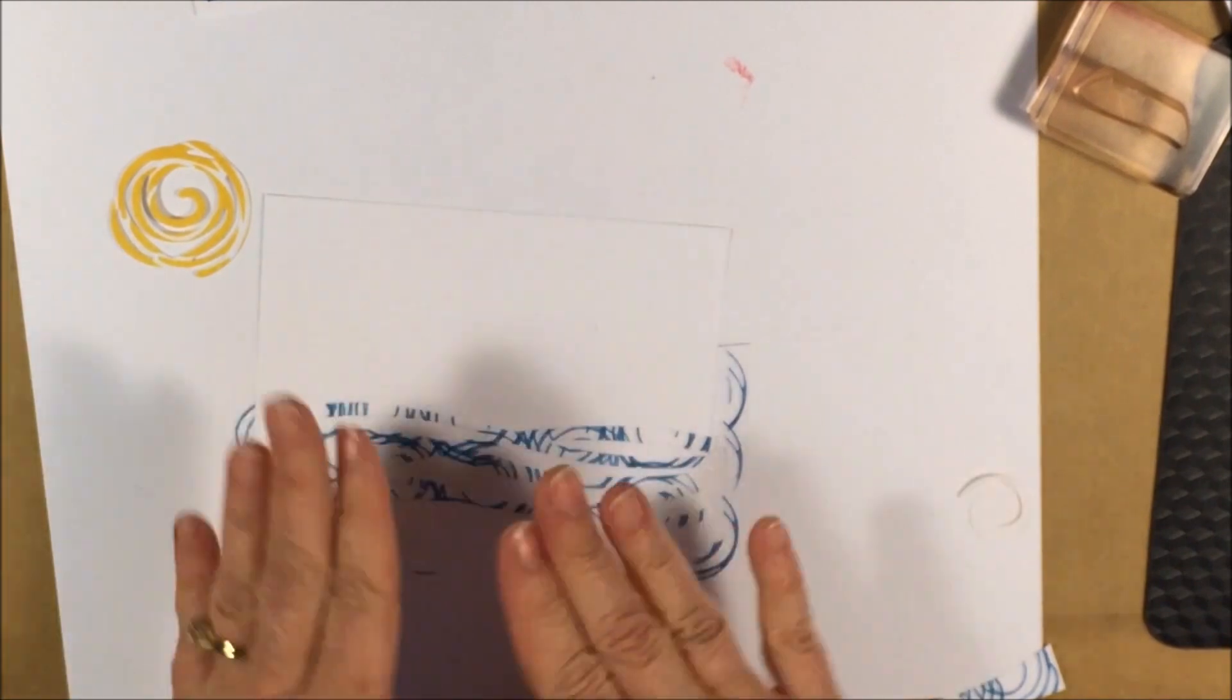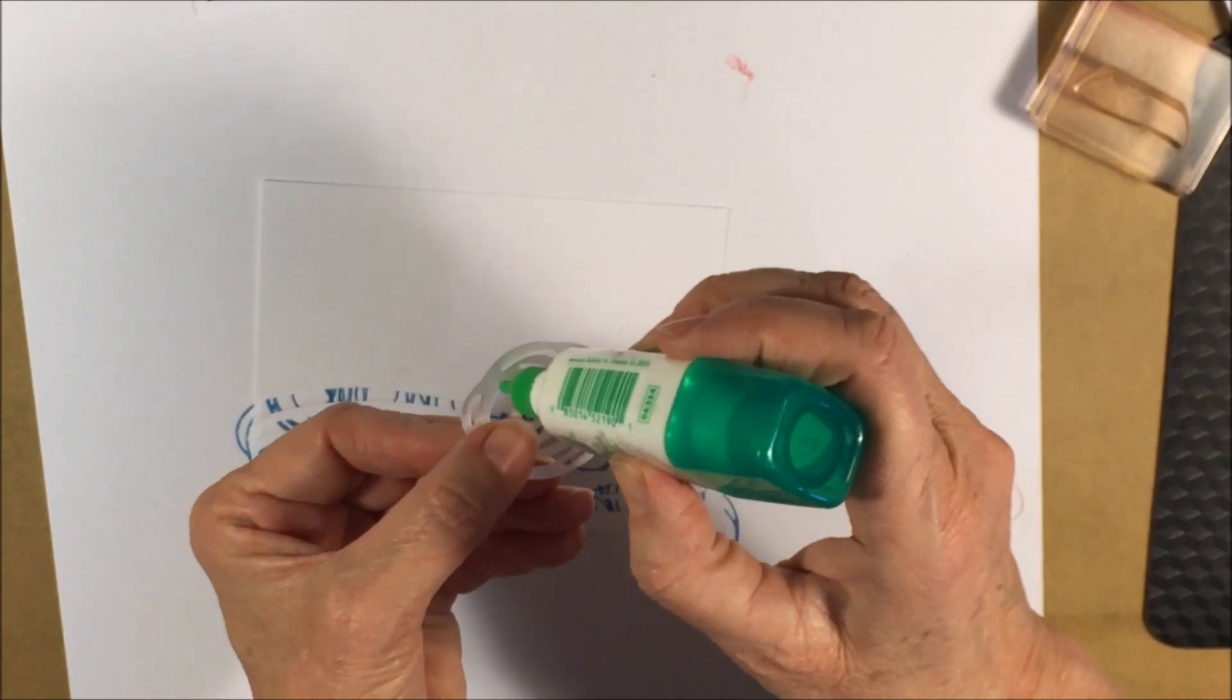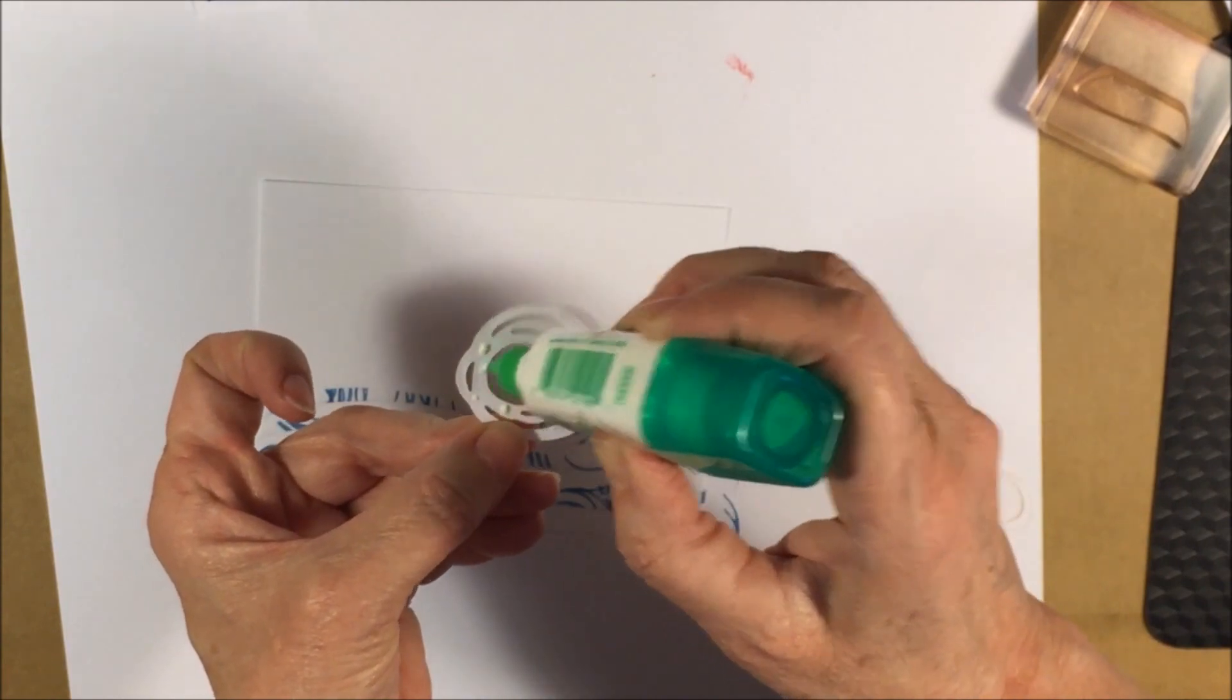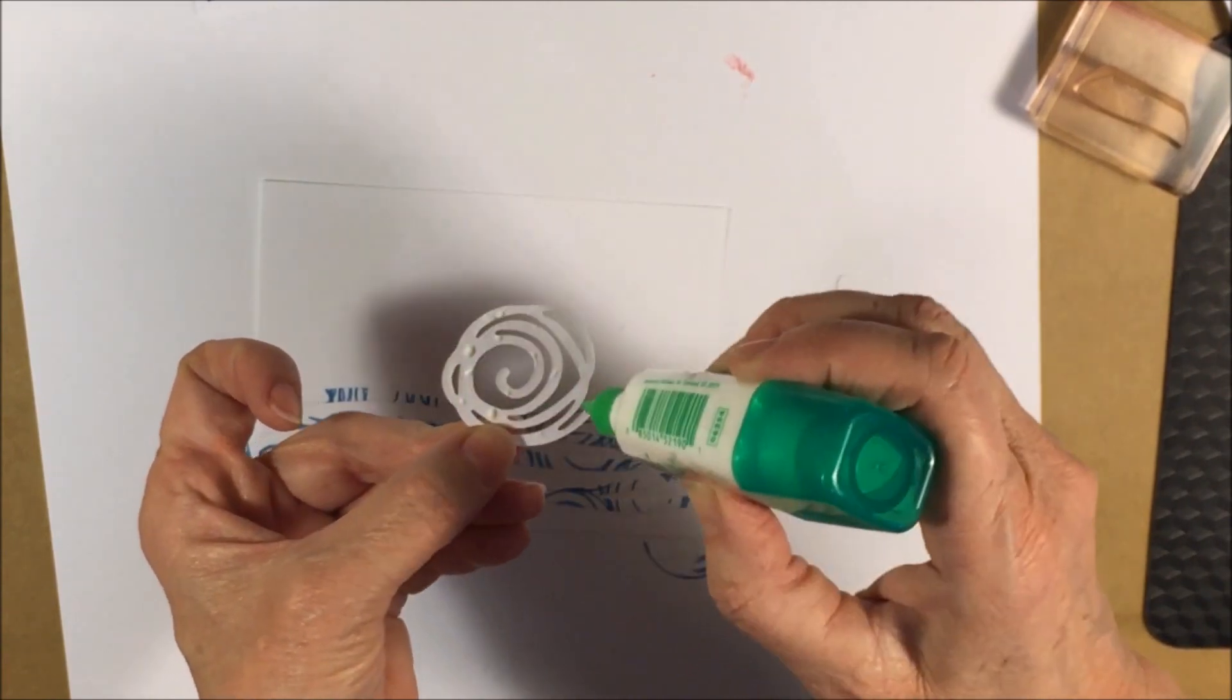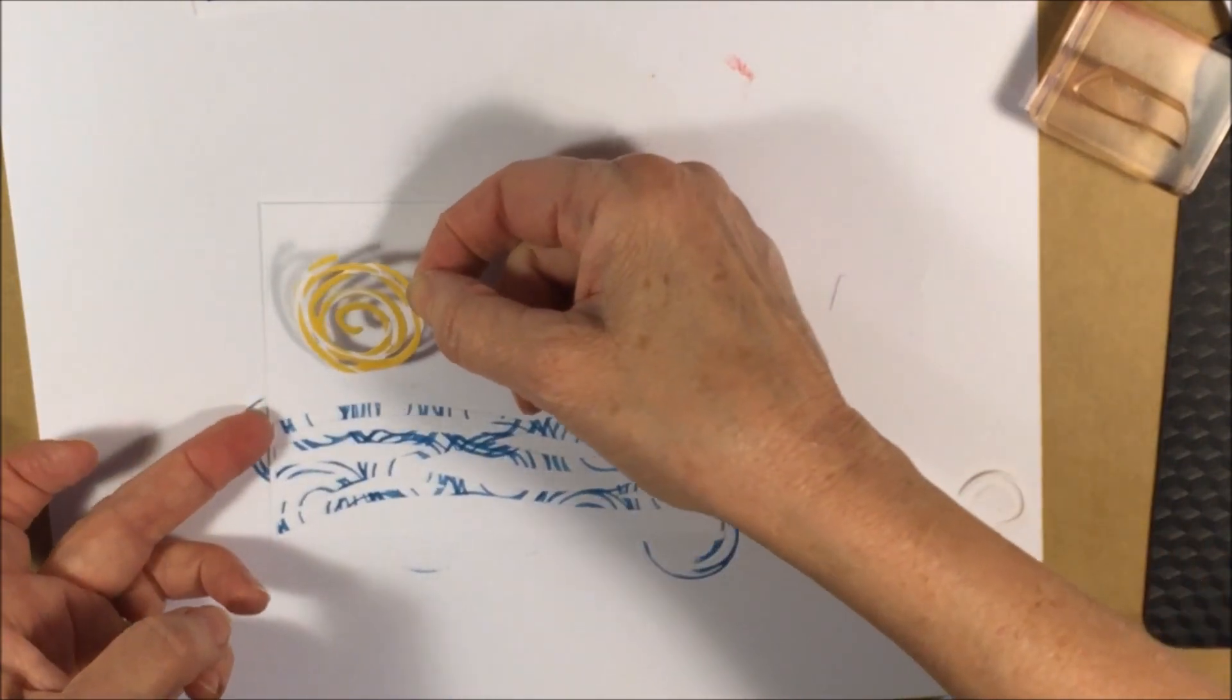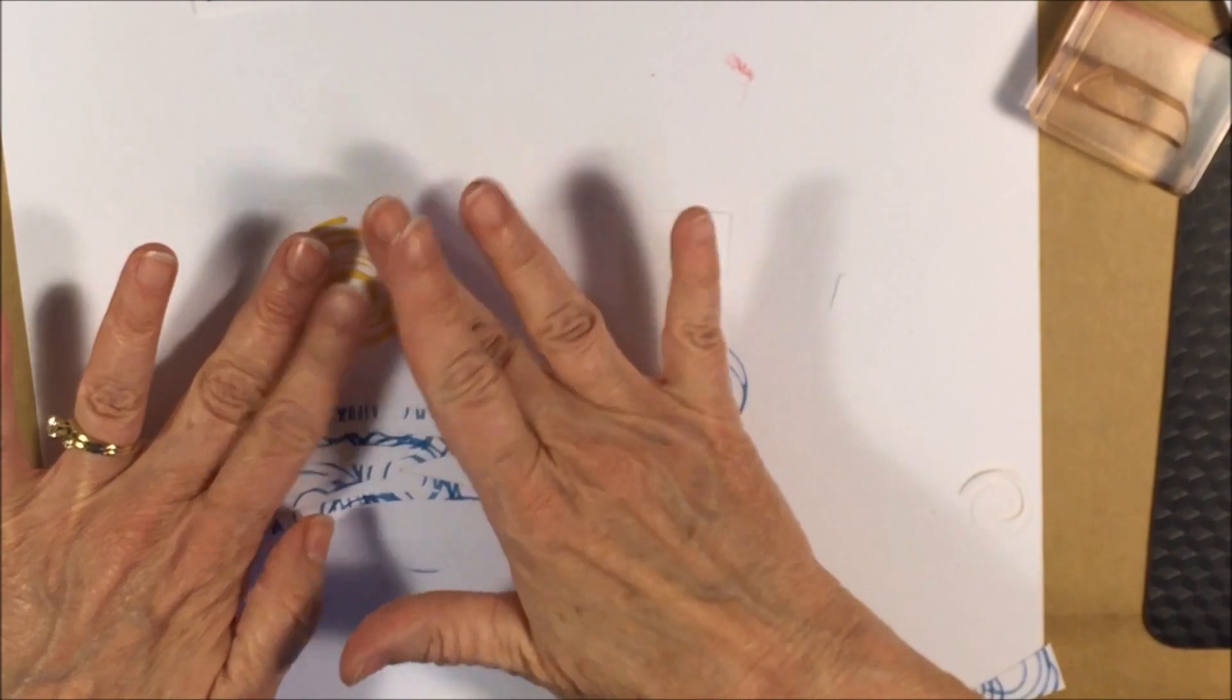My hands are sticky. Same thing for the sun. Tombow glue on the back. Isn't this easy? My hands get a little sticky, but that's okay. I love Tombow glue though because it gives you a little bit of play. Put our sun up there. So pretty. I love this stamp set.